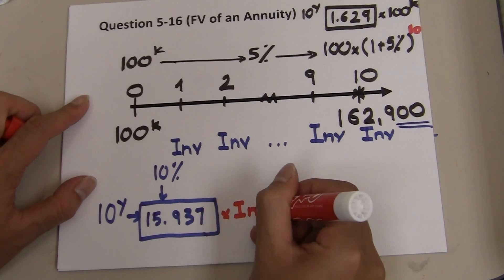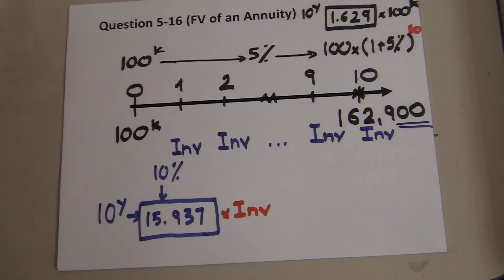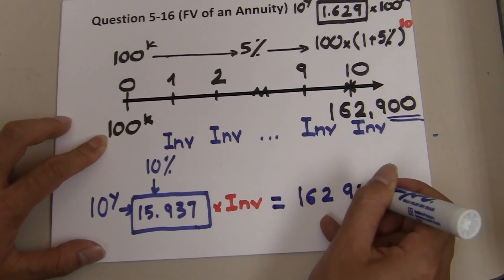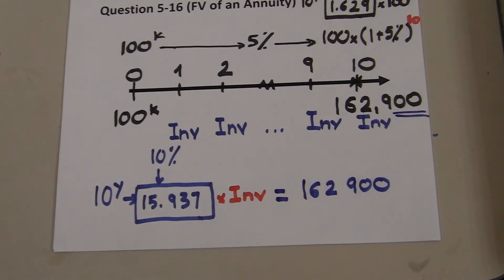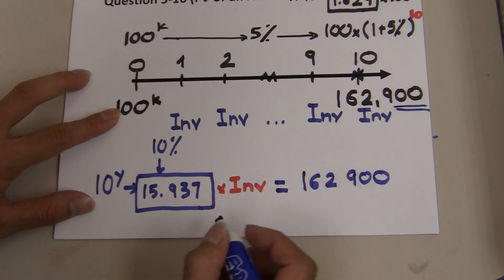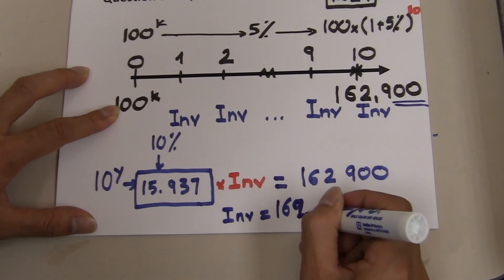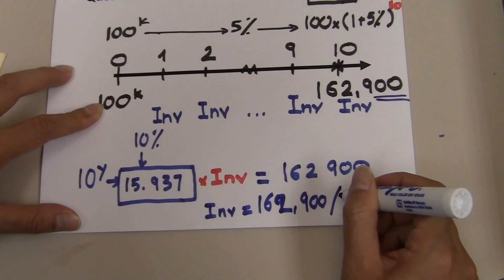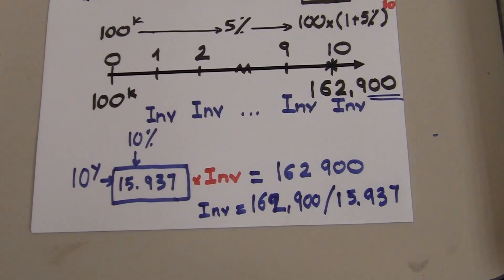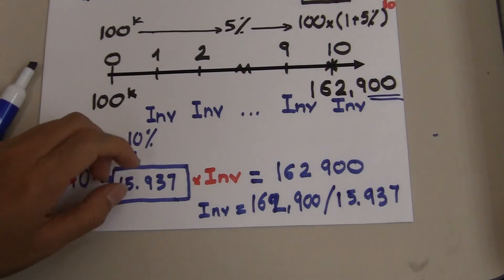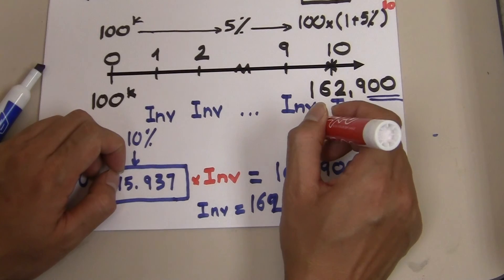However, you are not putting in $1 — you are putting in an unknown amount in order to achieve $162,900. You can simply take the investment equal to $162,900 divided by 15.937. The answer is $10,221.50.